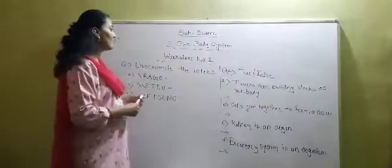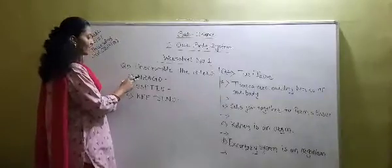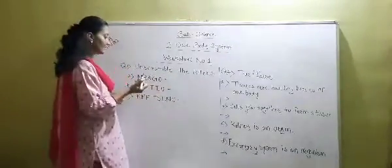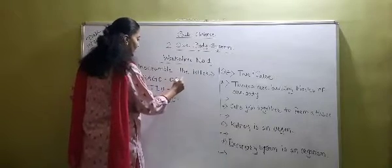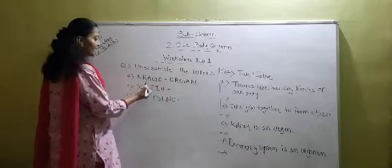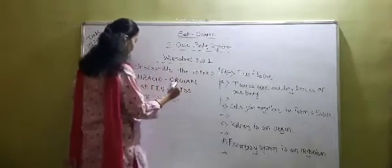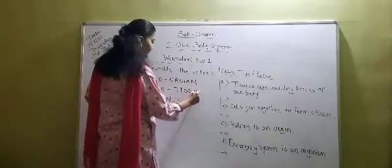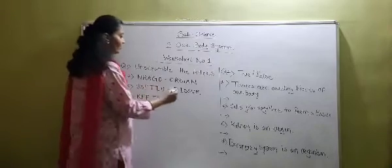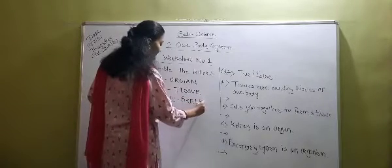See worksheet number one that we are going to solve now. First is: unscramble the letters. The first word is N-R-A-G-O. The answer is O-R-G-A-N — organ. The second word is S-S-E-T-I-U — the answer is tissue. The next word is K-E-E-T-S-L-N-O — the answer is skeleton.